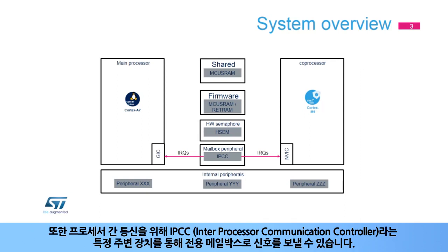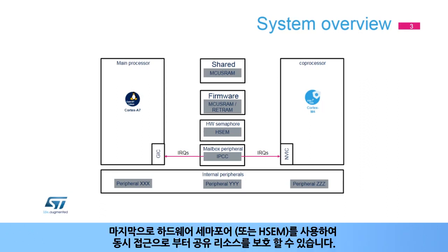Furthermore, for interprocessor communication, a specific peripheral named Interprocessor Communication Controller, or IPCC, enables signaling by dedicated mailboxes. Finally, a hardware semaphore, or HSEM, can be used to protect shared resources from concurrent accesses.